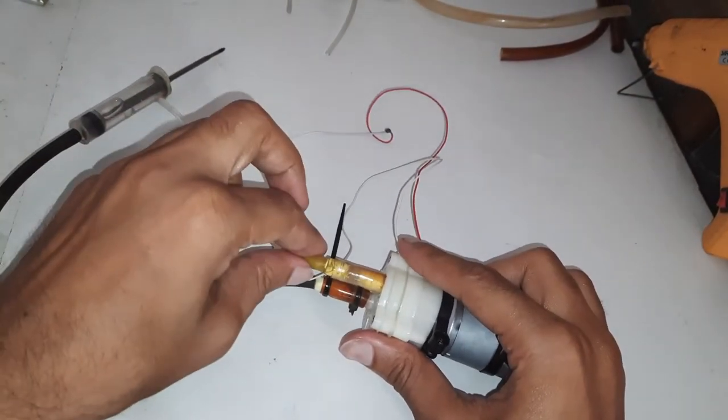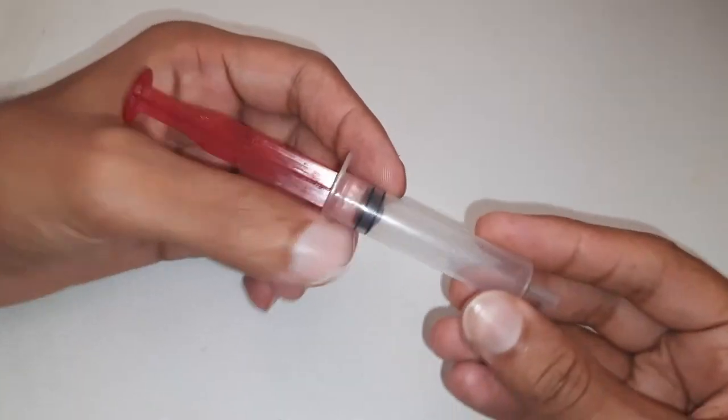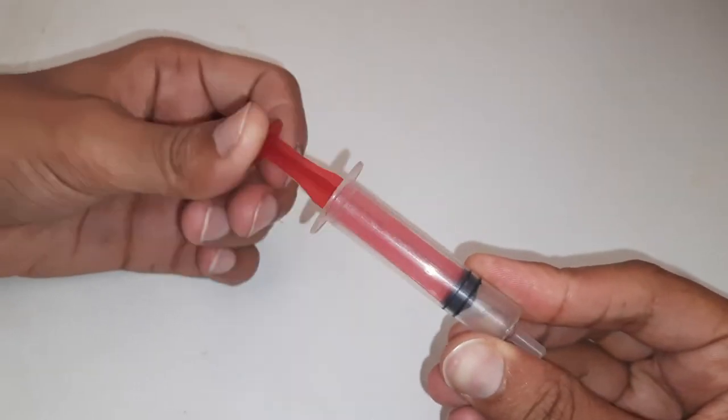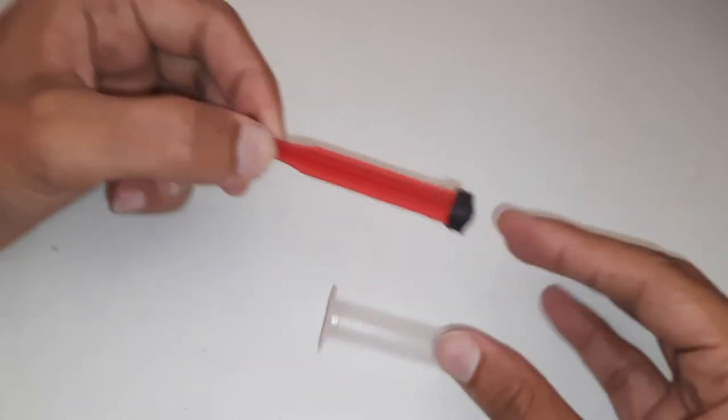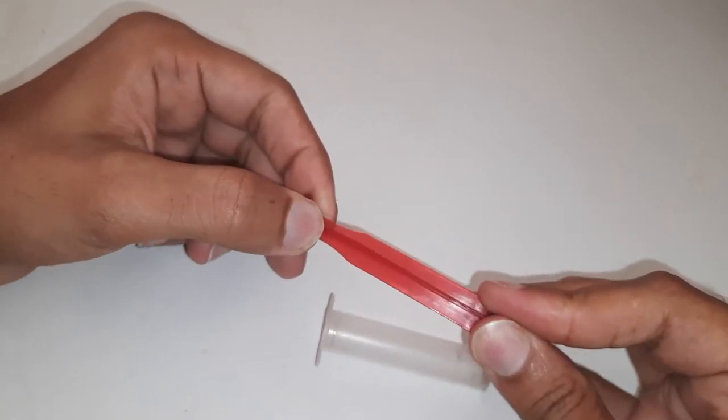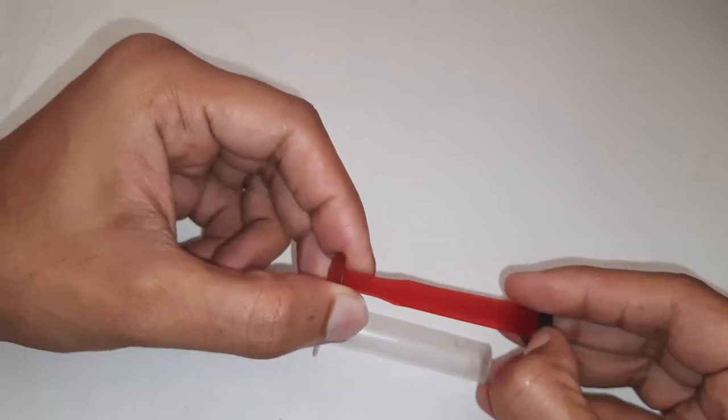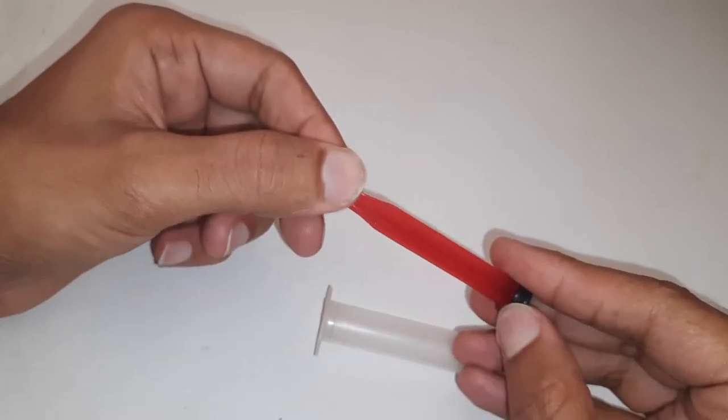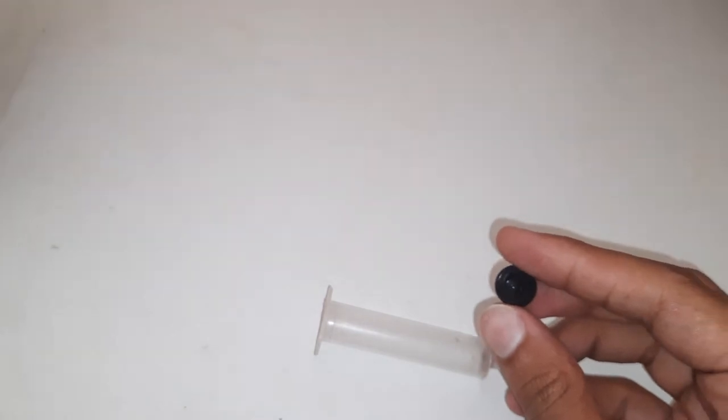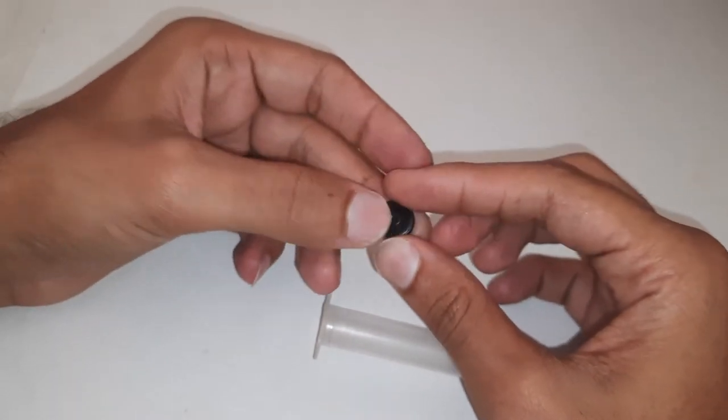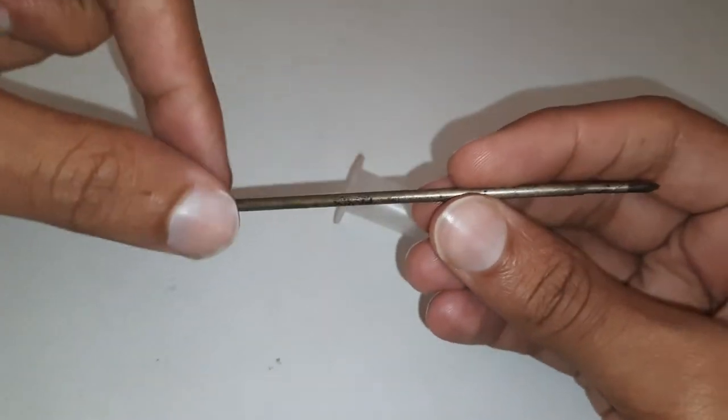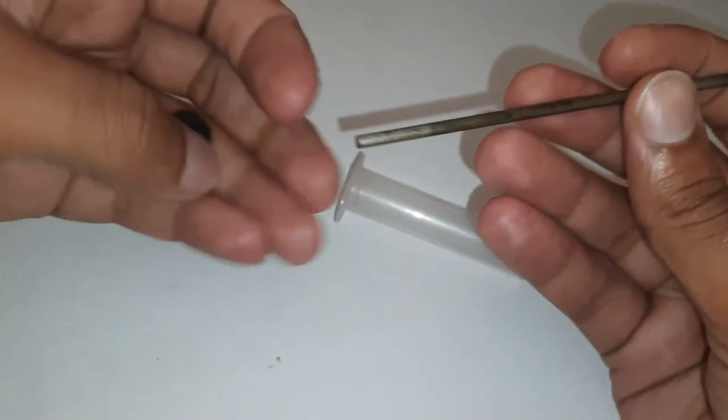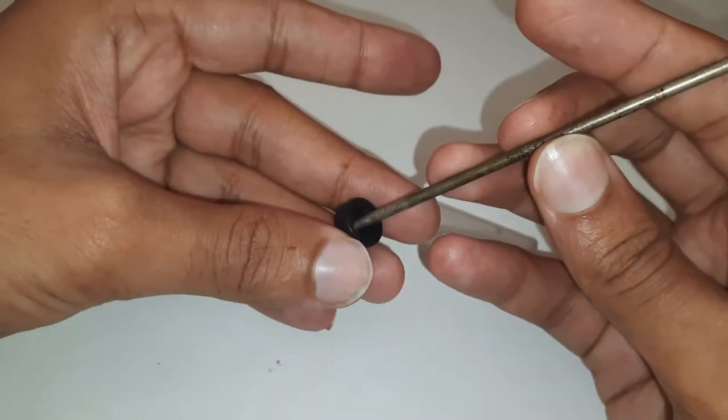So here in this video I'm making a linear actuator with this syringe. I will remove this plunger and will use this rubber grip. This pen refill will be placed inside.